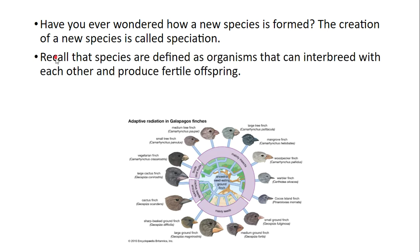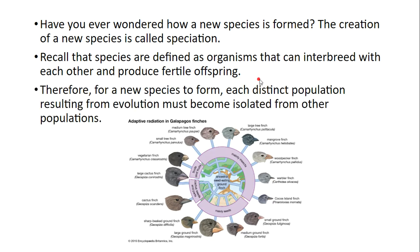So please remember that a species is defined as organisms that can interbreed with each other and produce fertile offspring. The key word here is fertile. Any male or female from that species that can create fertile offspring — that is a species.